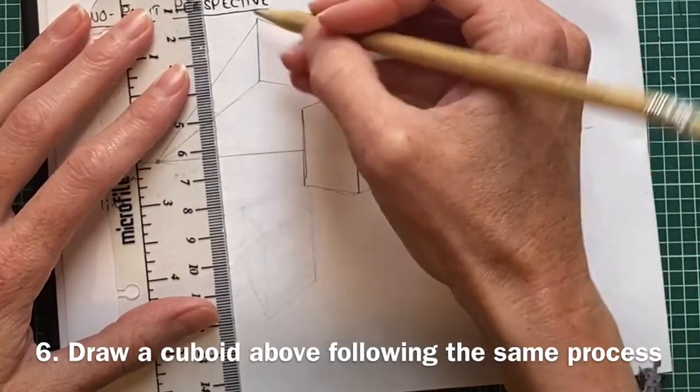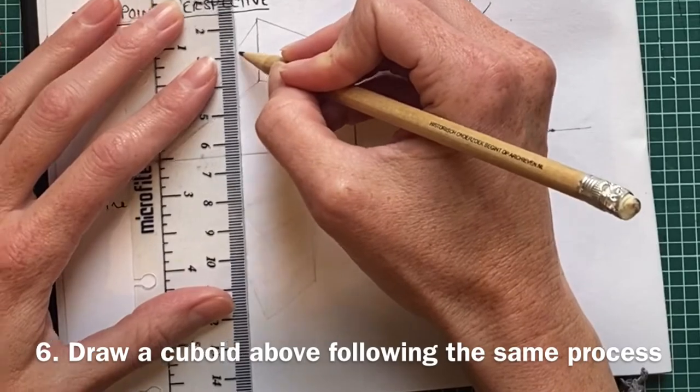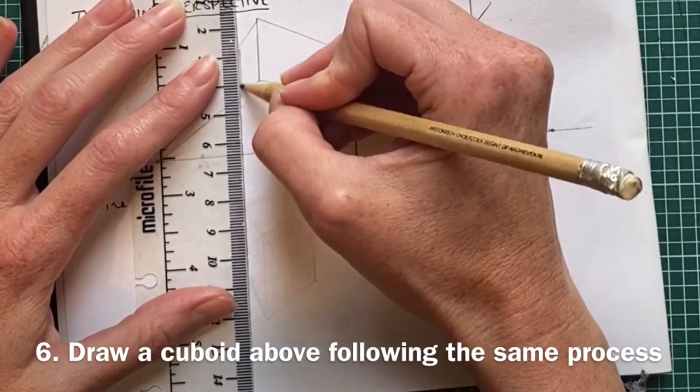Now, same as before, I decide where I want the two sides of the cuboid to go. Let's make this one a narrow one there.